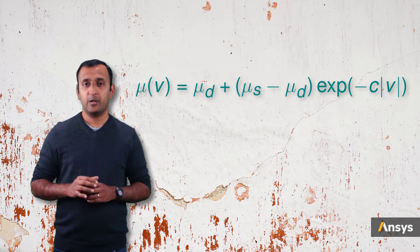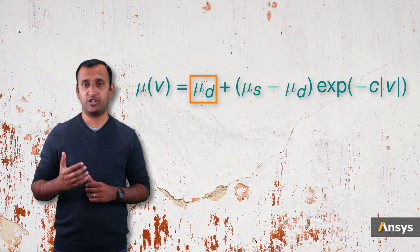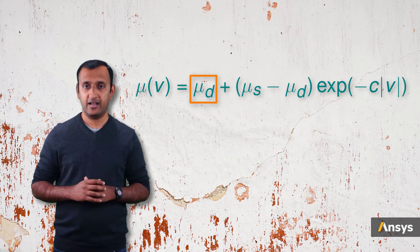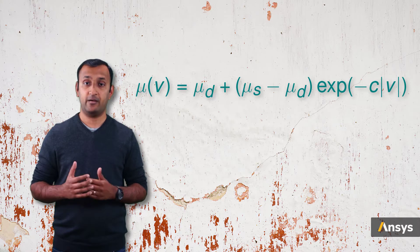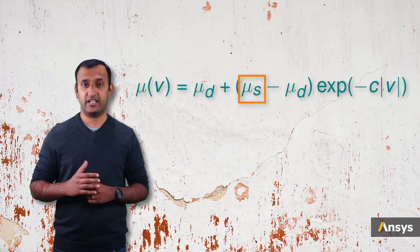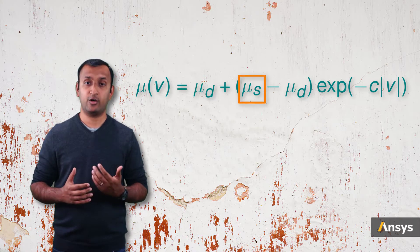Over here, mu d is the coefficient of friction in slipping state, and it's called the dynamic coefficient of friction. And mu s is the sticking state, and called the static coefficient of friction.